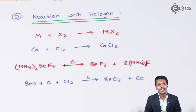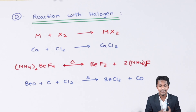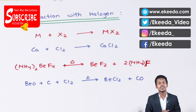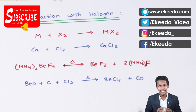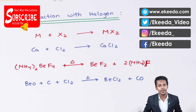This was a summary of the different kinds of reactions exhibited by group 2 elements, the alkaline earth metals. Thank you friends for watching this video. I hope you have understood the various concepts behind this topic. Please share this video with your friends and don't forget to subscribe to the channel.